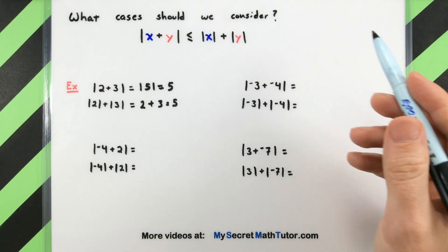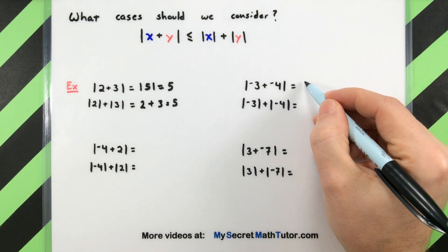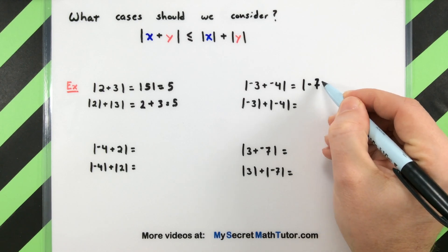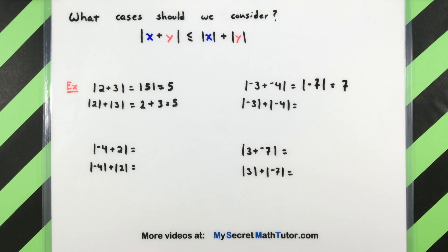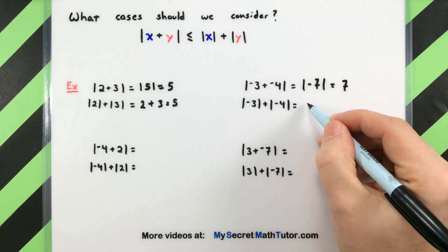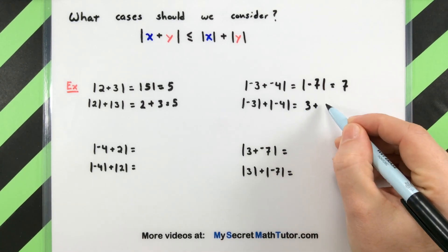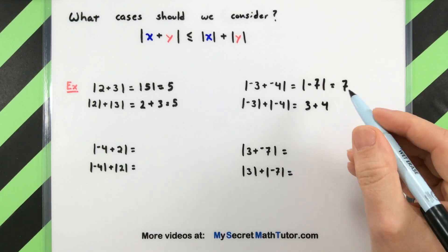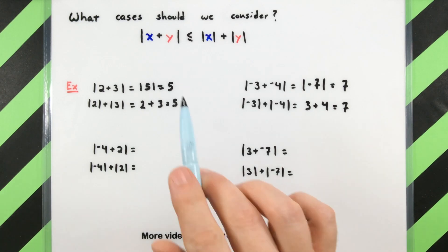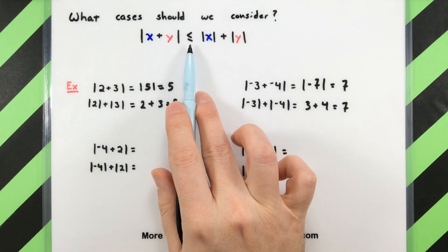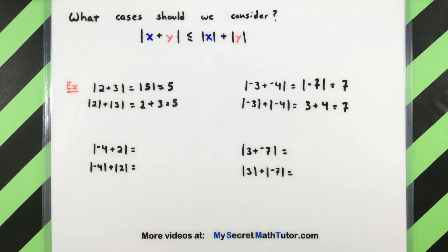Let's do another example. Here I have negative 3 and negative 4. Adding those gives us negative 7; taking the absolute value gives us positive 7. On the other hand, absolute value of negative 3 is positive 3 and absolute value of negative 4 is positive 4, giving us positive 7. This shows it's perfectly possible that the left-hand side and the right-hand side could actually be equal, which is why this inequality has that 'or equals' sitting right there.